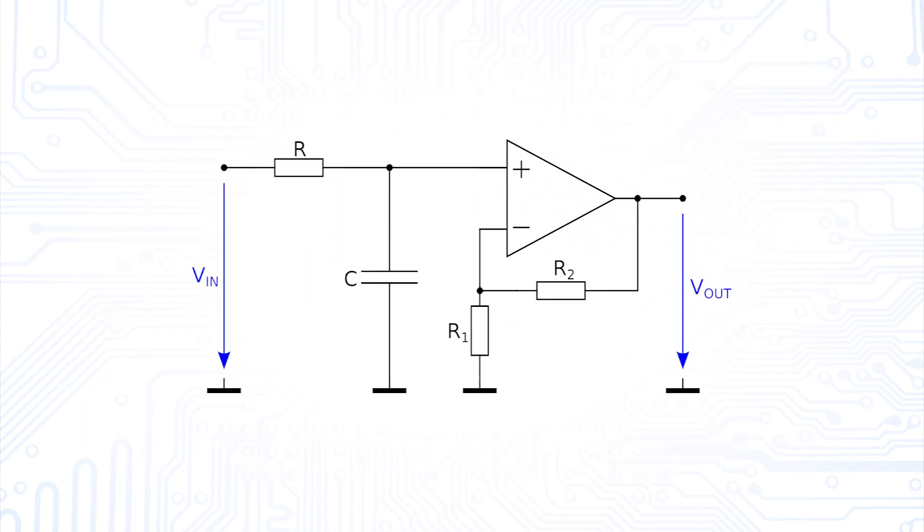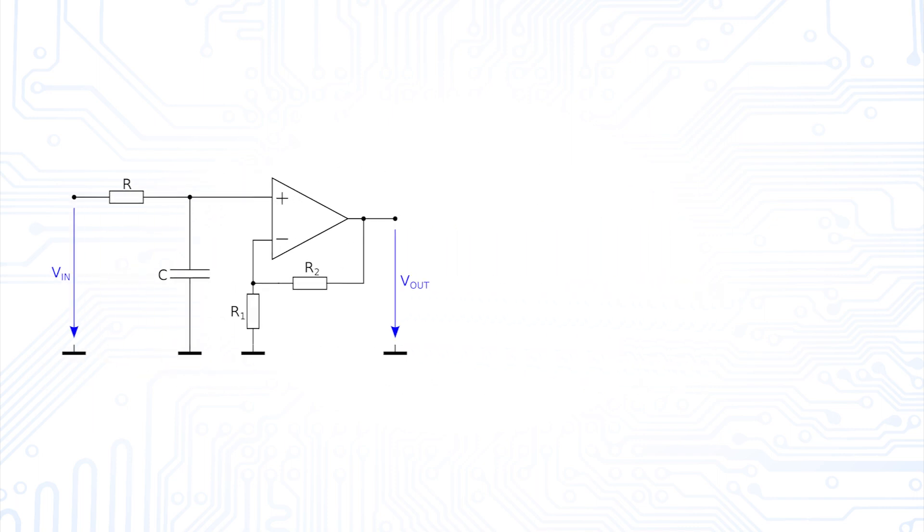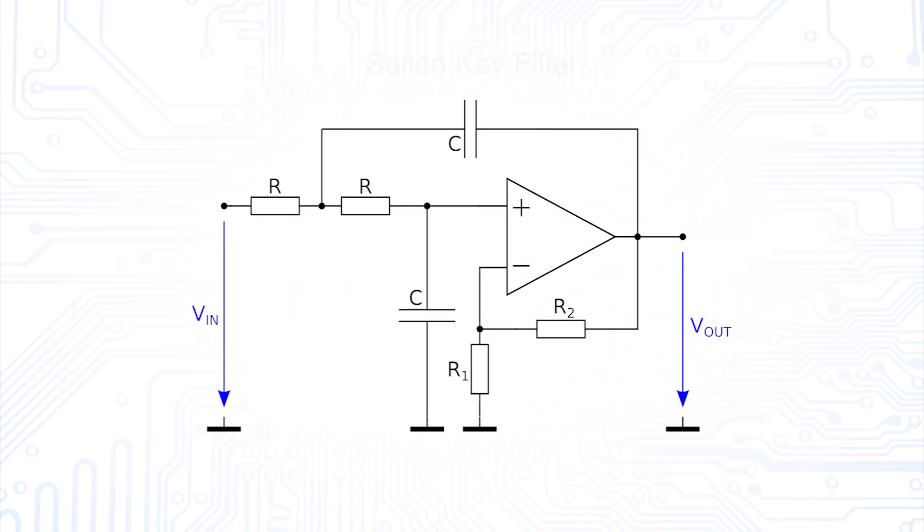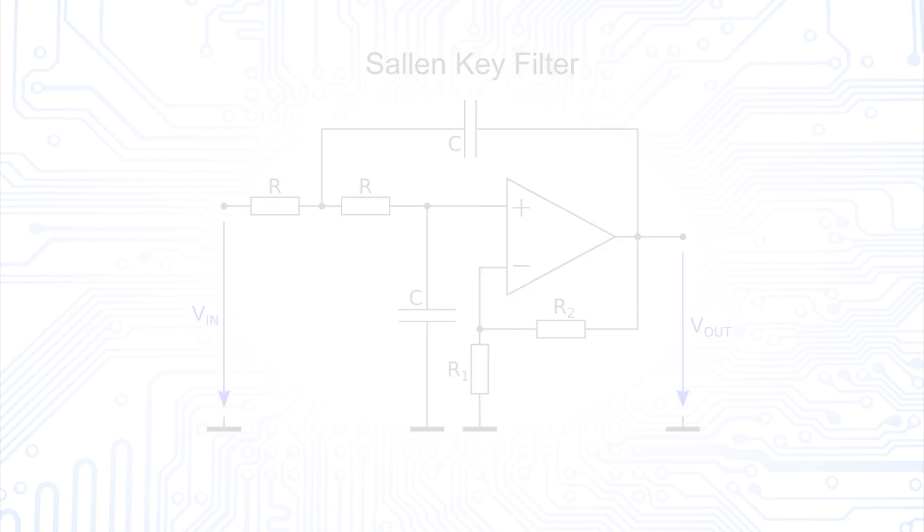In order to do this, we simply add another RC element to our circuit. The filter circuit we built with this is called a Sallen-Key filter. These filters, together with the multiple feedback filters, which we will hear about more later, are among the most common active filters of higher order.